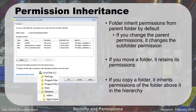So if I take something from C:\Users\Dave and move it to C:\data, it's going to keep those permissions it already had. However, if I copy that folder — leaving the original in place and making a second copy — that copy is just going to get the permissions of whatever folder I put it into; it will inherit from the one above it. So copying means you inherit new permissions; moving means you keep your old permissions.